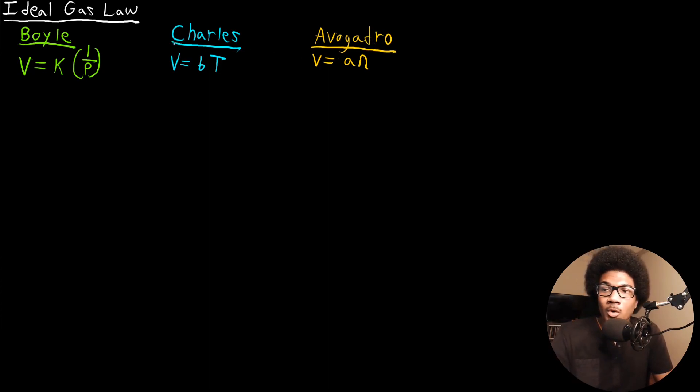What we're going to call an ideal gas is any gas that follows these proportionality statements exactly. So an ideal gas is going to be any gas that can be accurately described by Boyle's law, Charles's law, and Avogadro's law.